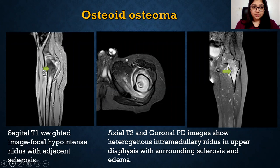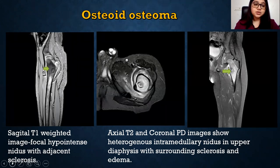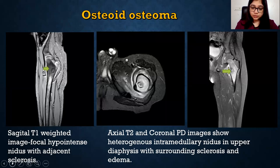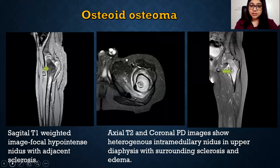A patient presented with night pain that was gradually increasing and relieved by aspirin. The sagittal T1-weighted image showed a focal hypointense nidus with adjacent sclerosis. Axial T2 and coronal PD images showed a heterogeneous intramedullary nidus in the upper diaphysis with surrounding sclerosis and edema. MRI is very useful to assess the edema pattern — whether intramedullary or perilesional — as edema is well visualized on MRI.